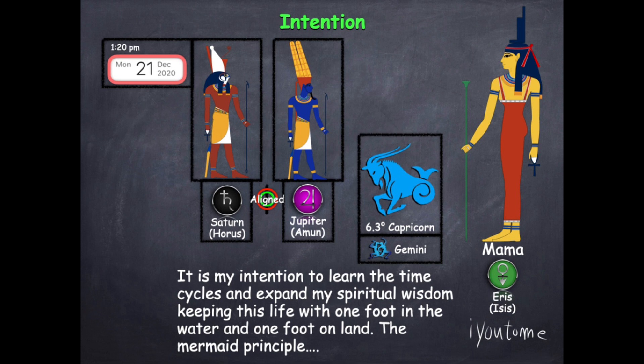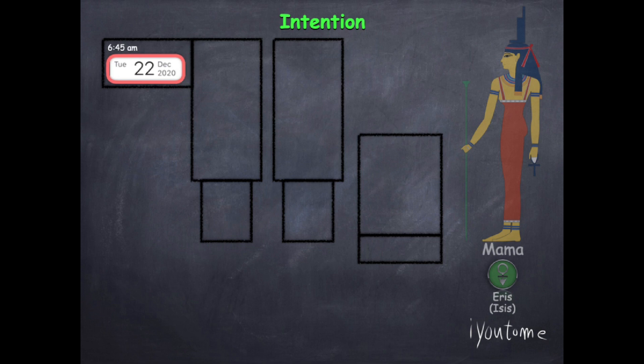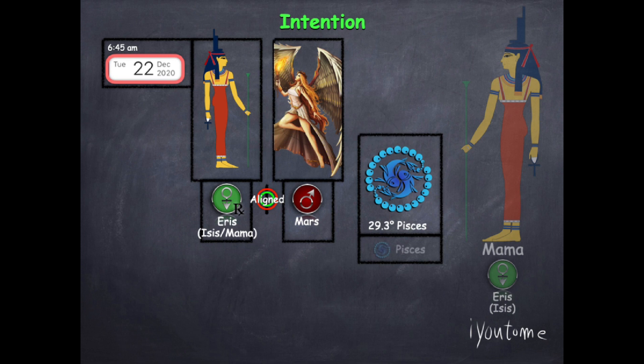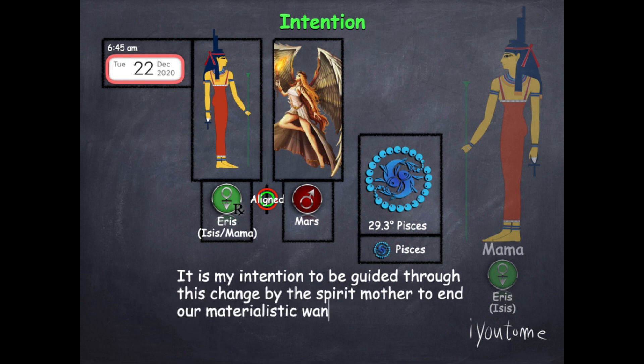Know there's many more alignments, not just this one. It's a sequence of alignments happening as we get to the future events which we talked about in other videos. On December 22nd there are three alignments. First, 6:45 AM Eastern Standard Time. This alignment is between Eris the mother of all mothers and Mars the materialistic change agent in Pisces end of cycles in the sub harmonic of Pisces. This is my intention: It is my intention to be guided through this change by the spirit mother to end our materialistic wants of this Pisces cycle.